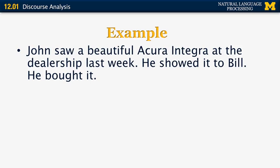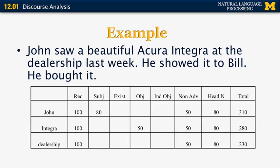Now let's look at an example from Jurafsky and Martin with three sentences: 'John saw a beautiful Acura Integra at a dealership last week. He showed it to Bill. He bought it.' We have four pronouns to resolve. For the first 'he' in the second sentence, we have three candidate antecedents: John, Acura Integra, and dealership. They all get 100 points for being in the most recent sentence. John gets 80 additional points for being the subject, and Integra gets 50 for being the object. Including head noun and non-adverbial bonuses, John totals 310 points, Integra 280, and dealership 230. So John is identified as the most likely antecedent for 'he.'